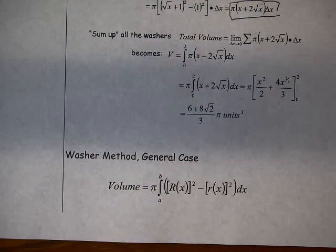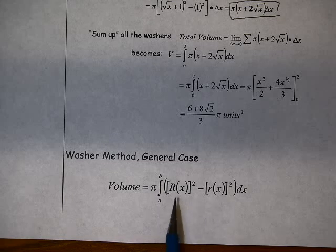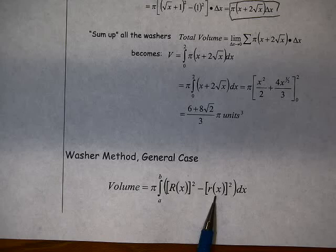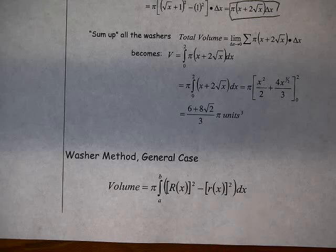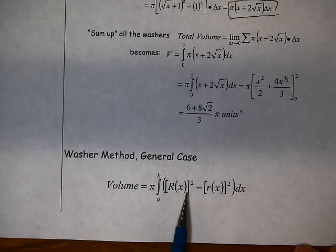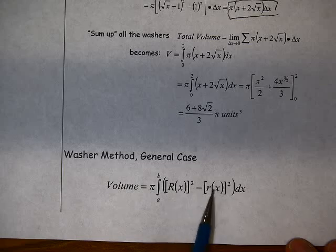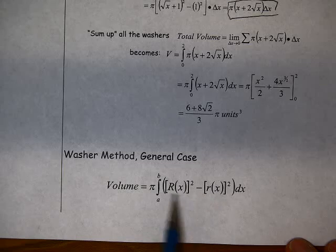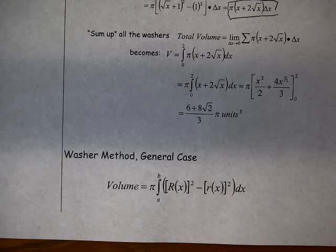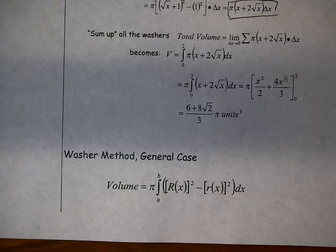So for the washer method, our general case is going to be pi times the integral from a to b. We have big R squared minus little r squared dx. Notice that when we do this, we square each of the radii first. We square big R, and we square little r first, then we do the difference. It's very important that we do that. We don't want to find the difference and then square it. We want to square them, then find the difference, and integrate from a to b, multiply by pi. That'll give us the volume.